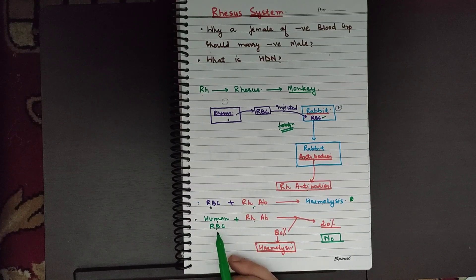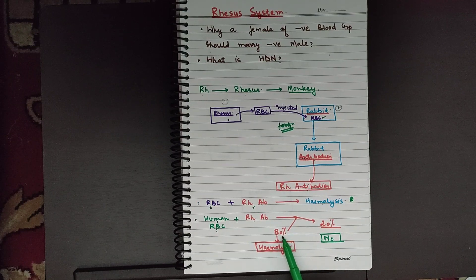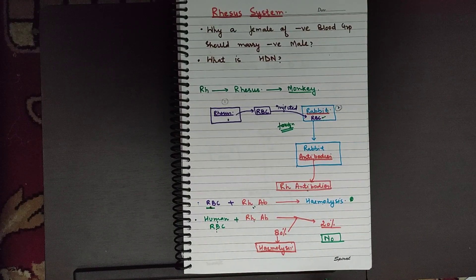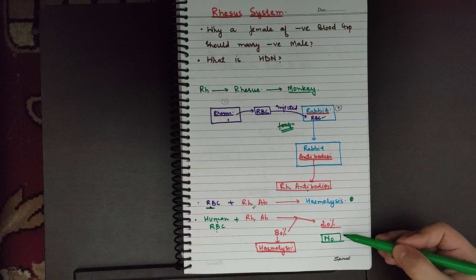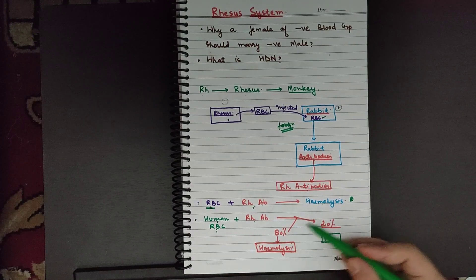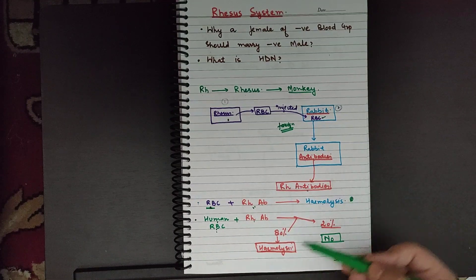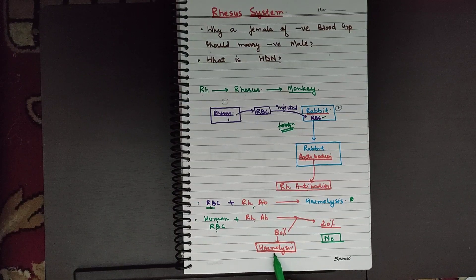When we mix human RBCs with the RH antibodies, we see two kinds of responses. 80% of the population shows the same response as the Rhesus blood — hemolysis occurs, just as it did with the Rhesus monkey's blood. 20% of people have blood which does not show hemolysis. So 80% of the population showed hemolysis and 20% did not. This was the experiment: we isolated the antibodies, tested on human RBCs, 80% hemolysis occurred and 20% showed no hemolysis.